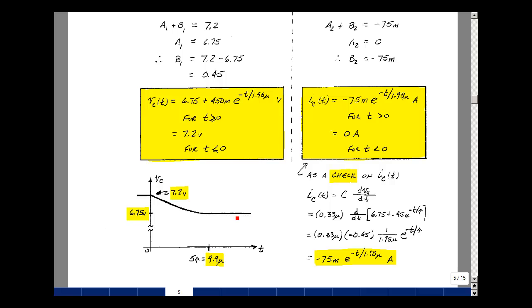So after five time constants, I'll be dropping down to a value of 6.75. You can make a rough sketch, just exponentially going from 7.2 to 6.75 in five times the 1.98 microseconds, almost 10 microseconds. So very easy to make a quick sketch.